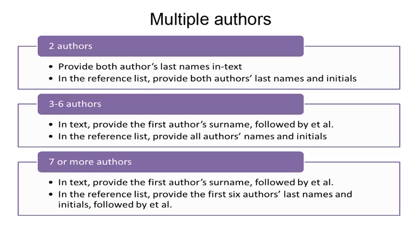These guidelines for multiple authors apply to all sources. For author-prominent citations, when a source has two authors, include the last names of both authors. For more than three authors, provide only the last name of the first author followed by et al.